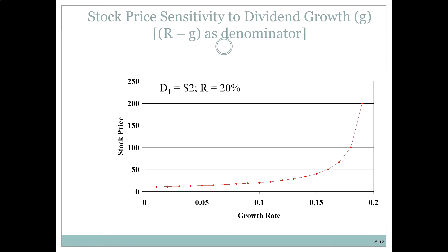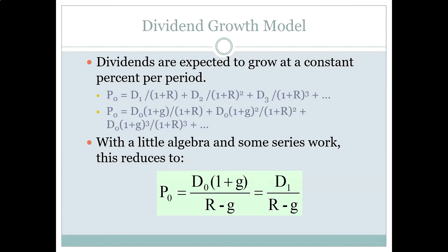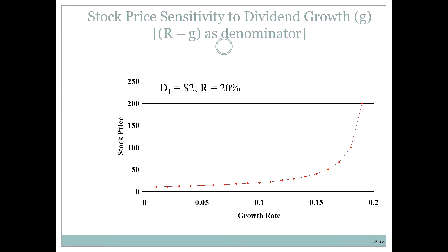But when we have a model like this, we're making a lot of assumptions. We're making assumptions about the dividend that's being paid. We're making assumptions about the growth rate in the dividends, whether there is one and whether it's constant. And we're making assumptions about the discount rate R, and whether that is also constant, because it's assumed to be the same forever. And what this graph here is showing you is the sensitivity of the model to one of those assumptions, namely that the growth rate in the dividend is the same, and it's the same forever.